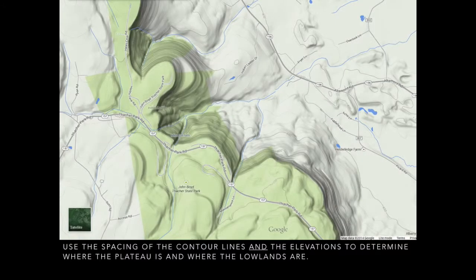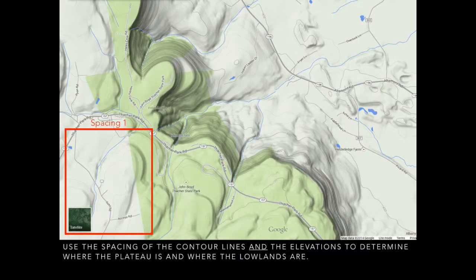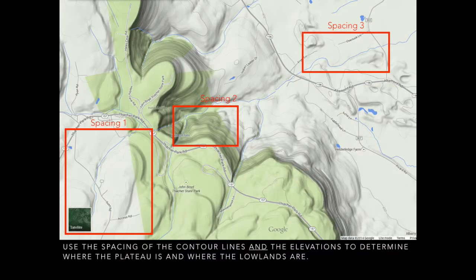Let's go back to that area on the contour map and see the difference again. Spacing number one — you can see the road there too — is flat on the top of the plateau. Spacing two is very steep because those contour lines are so close together; that marks the drop off. Spacing three, we're in the lowlands again that separate the two landscape regions. And our elevations for reference: 1200 feet is the top of the plateau, then we're dropping quickly to 600 feet, and in the lowlands the average elevation is 400 feet.